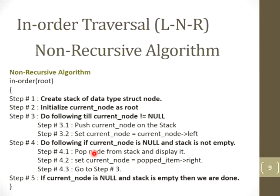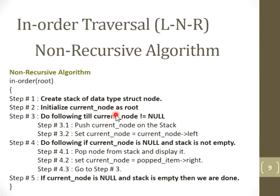For the non-recursive algorithm, we have to use the stack data structure — that is, an explicit stack that the programmer has to build. Now, assuming that you know the concept of stack data structure, let's assume you have created a stack of data type structure node, because in this stack you are going to store the nodes of the tree. That's why your stack should support storing nodes of a tree. You also have to initialize one variable — the current node — as root, because you are passing the root to this function and making the current node equal to the root node.